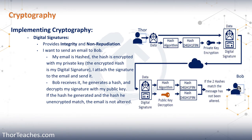Now let's look at how a digital signature works and the actual flow of the data. I am sending an email to Bob. Digital signatures give us integrity and non-repudiation — we can add confidentiality, but the most common use is integrity and non-repudiation. I send my email to Bob — that is the data package. Then I use a hashing algorithm to produce a hash of the data, and I encrypt that hash with my private key. That gives us the digital signature along with the data.